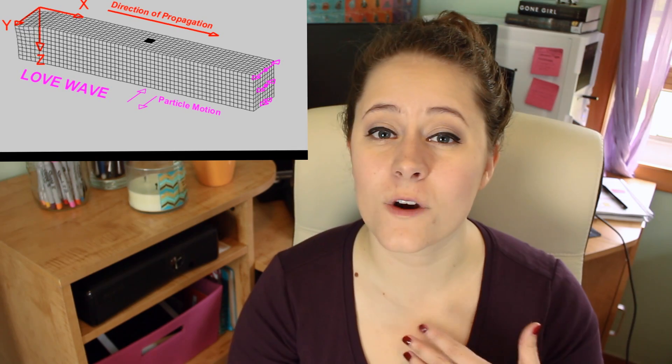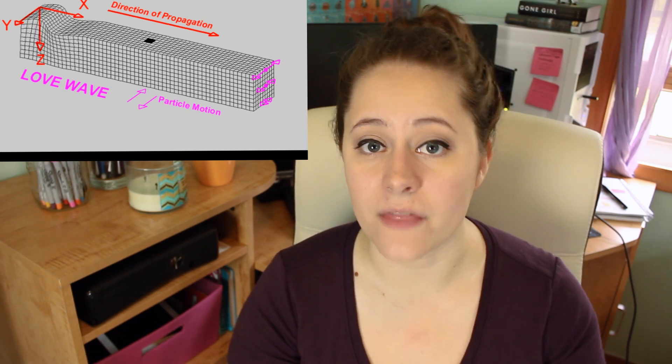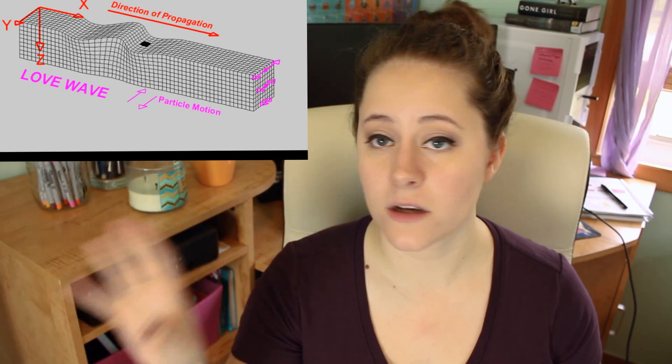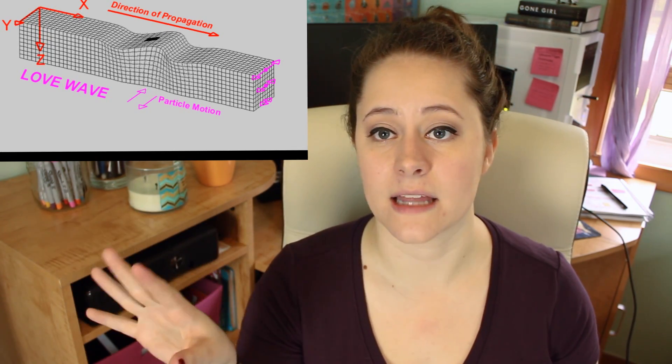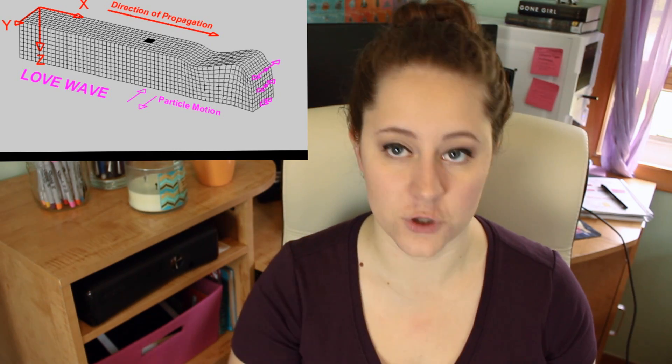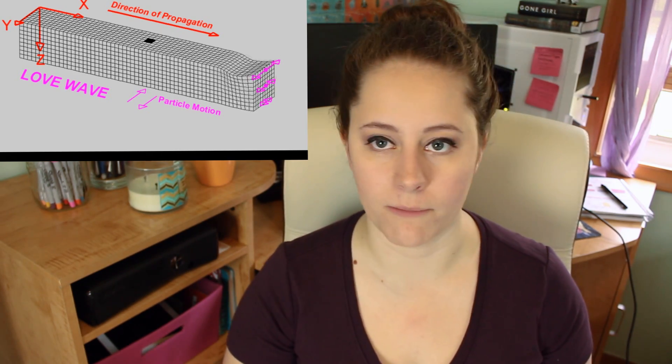Breaking it down to the two types, we have Love waves. Love waves are the fastest moving surface waves and they propagate horizontally on the surface. These aren't going to make much sense until you see the diagram, which is super helpful.